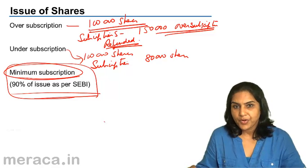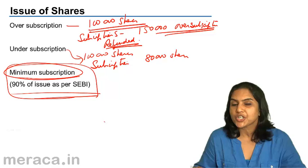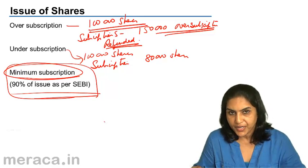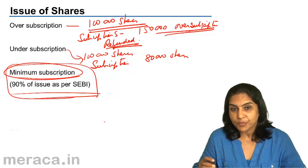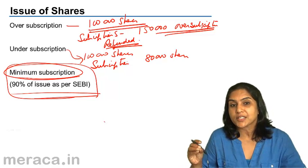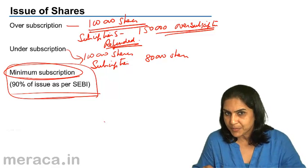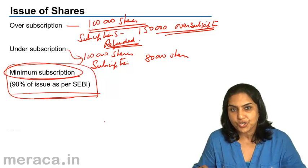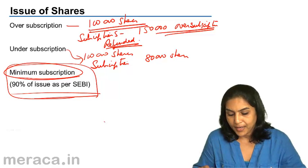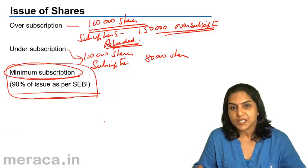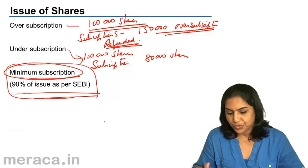So, therefore, when there is a share issue, there could be an over-subscription, in which case the extra money has to be refunded. There could be an under-subscription. If the under-subscription is such that the number of shares received is lower than the minimum subscription, the entire amount has to be refunded. Otherwise, the number of shares subscribed for would be lower than that which was issued.